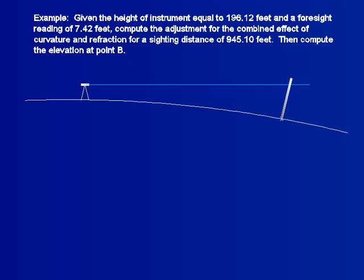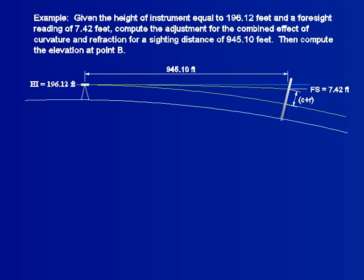This example demonstrates an elevation adjustment for curvature and refraction. Given an instrument height of 196.12 feet and a foresight reading of 7.42 feet, compute the curvature refraction adjustment for a sighting distance of 945.10 feet.